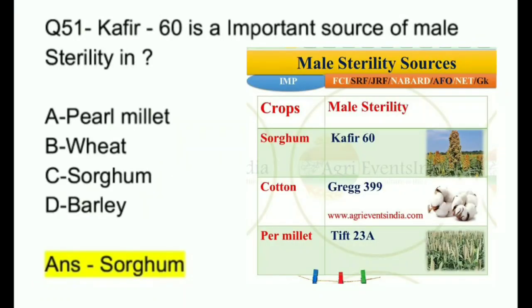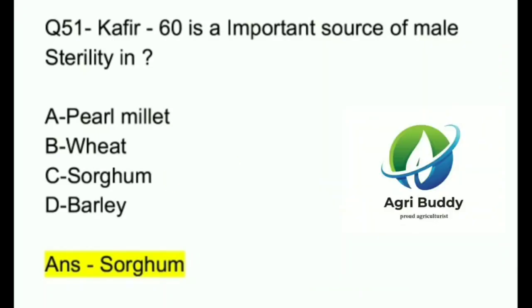Question 51. Kafir 16 is an important source of male sterility in? A. Pearl millet. B. Wheat. C. Sorghum. D. Barley. And the answer is Sorghum.